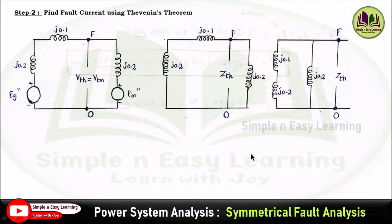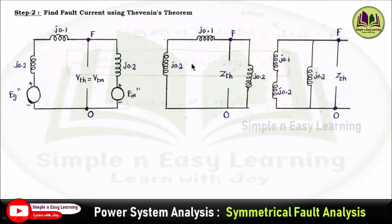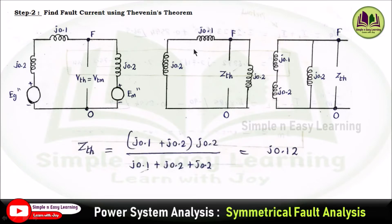Step 2: Draw the Thevenin equivalent circuit at the fault location. From the single line diagram equivalent circuit with generator, transformer/line, and motor, you need to obtain Z_Thevenin at the fault point. The fault point is a node; the impedances to the left (j0.2 and j0.1) are in series, and this series combination is in parallel with j0.2 on the motor side. Calculating: (j0.1 + j0.2) × j0.2 divided by (j0.1 + j0.2 + j0.2) gives Z_Thevenin = j0.12.